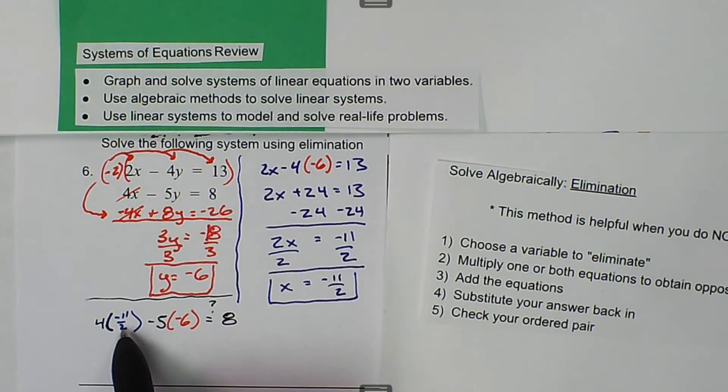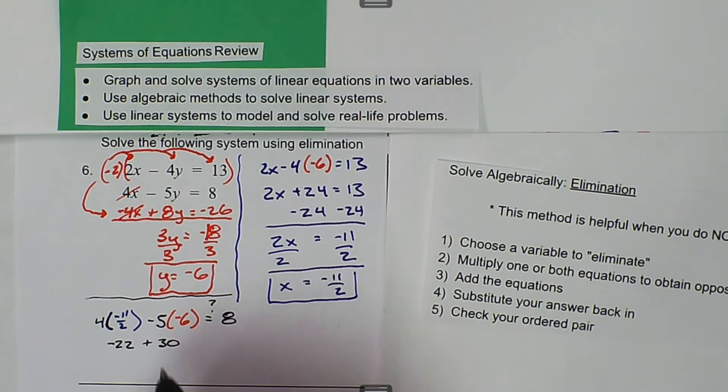So 4 and 2 cancel, so this ends up being negative 22 plus 30 does equal 8. So 8 does equal 8.